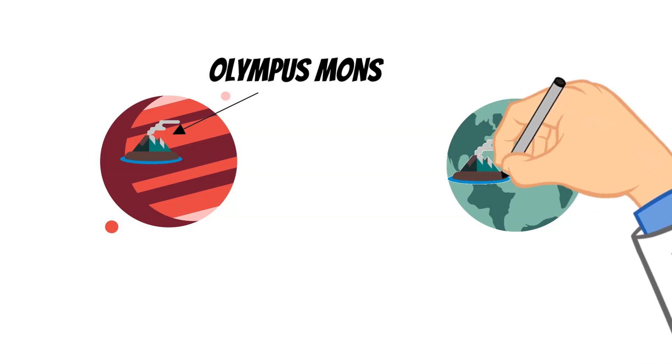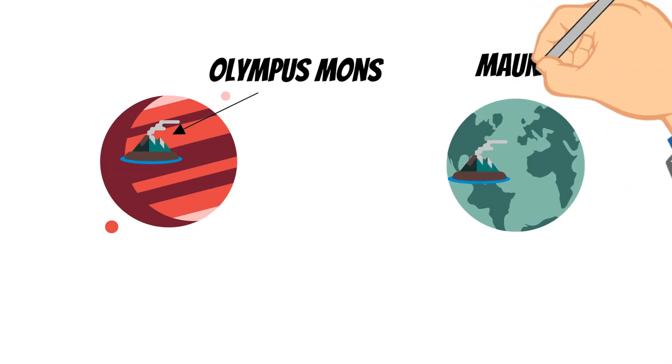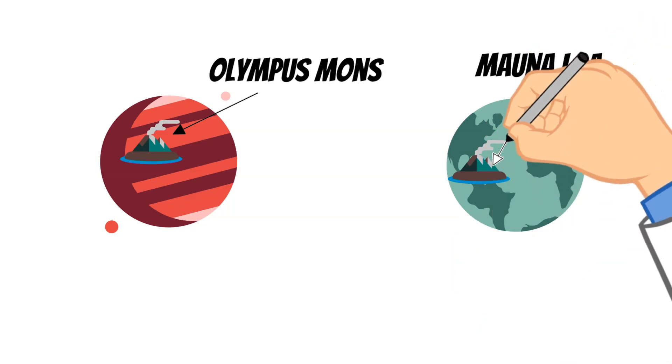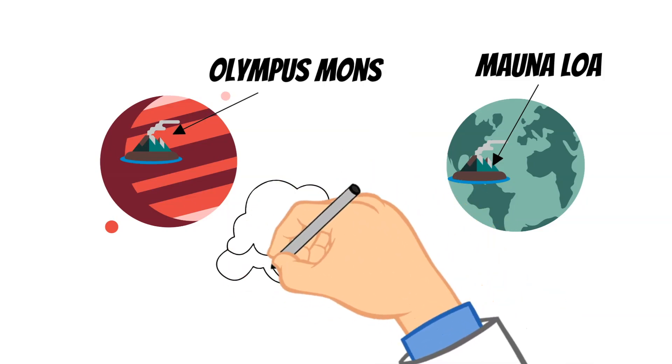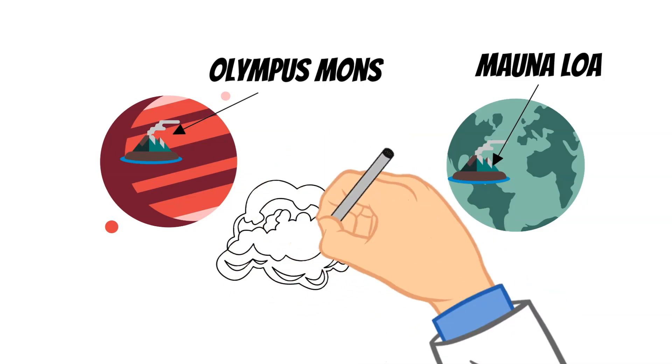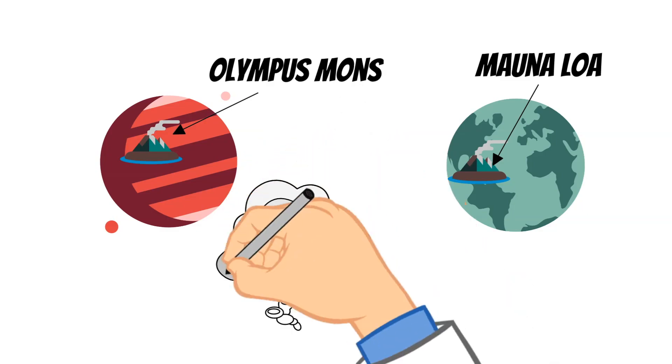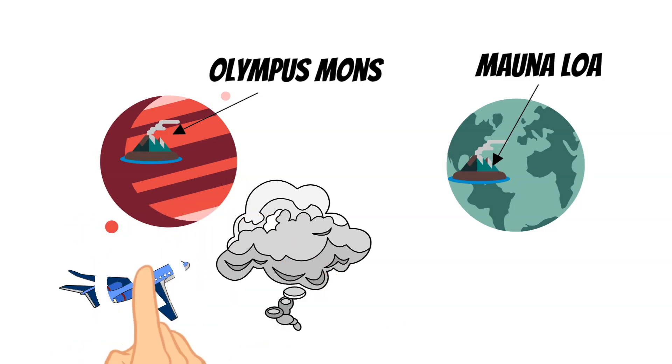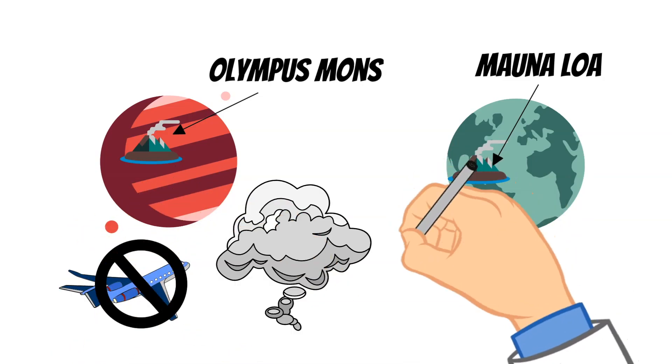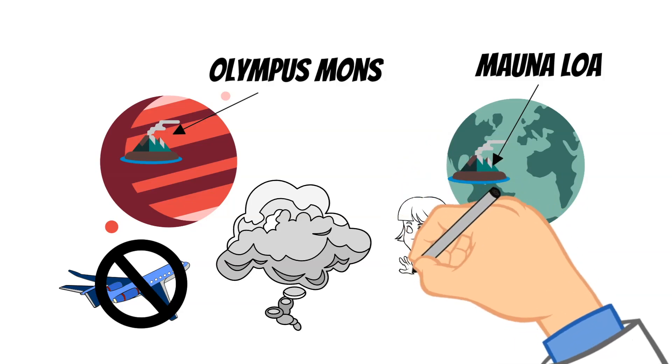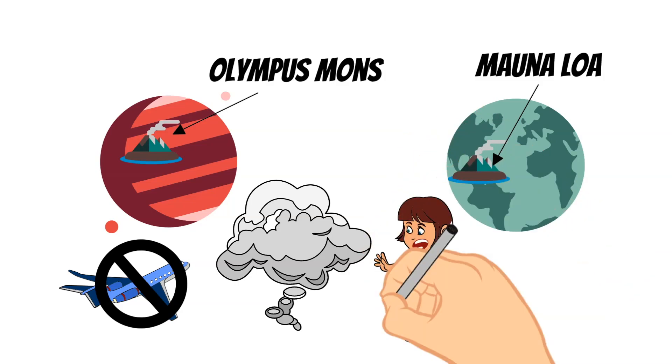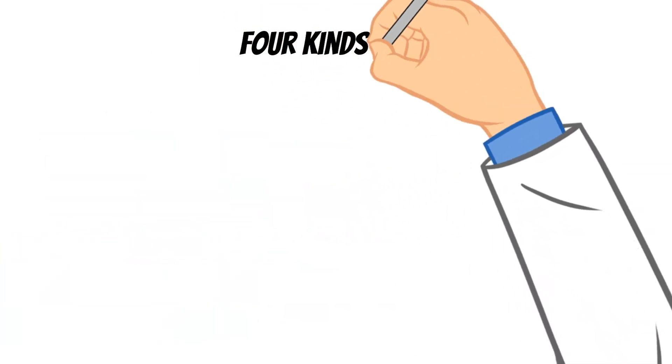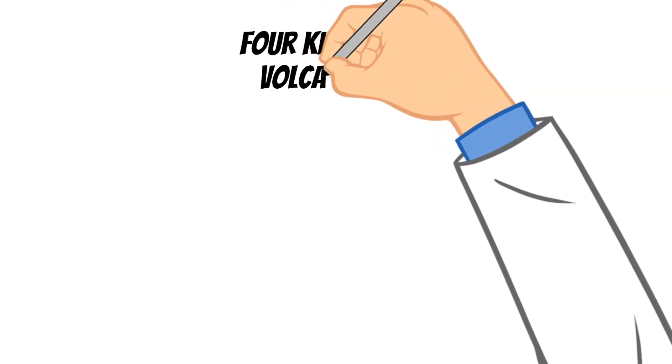Another fact about volcanoes is that they can produce what's called an ash cloud. And this ash cloud is just what you think it is. It is a cloud of ash and it can be very dangerous. It can be incredibly harmful for people to breathe and for planes to fly through. There are actually about 20 volcanoes erupting in the world at any given time. So let's talk about the four types of volcanoes. And to begin, let's talk about active volcanoes.